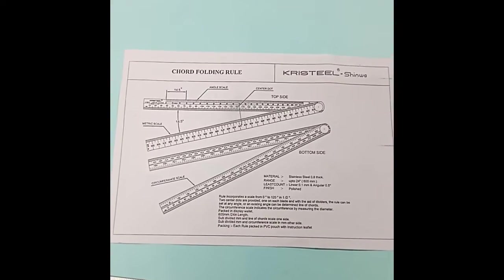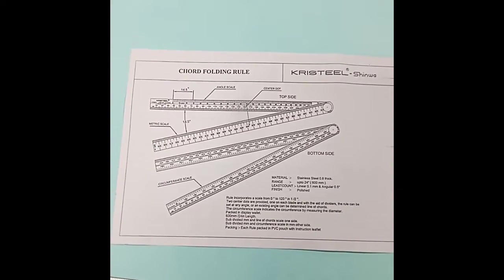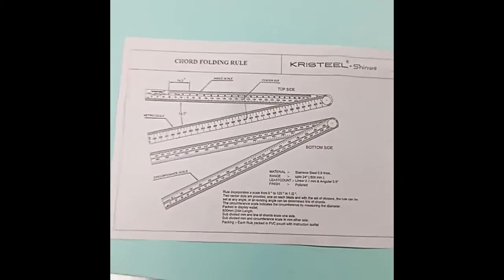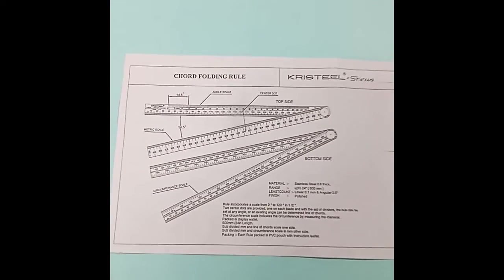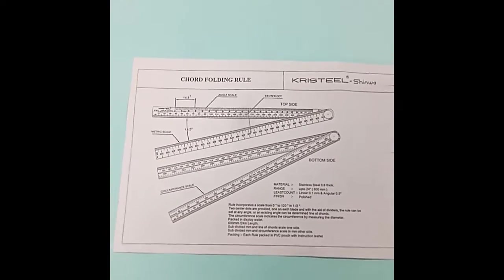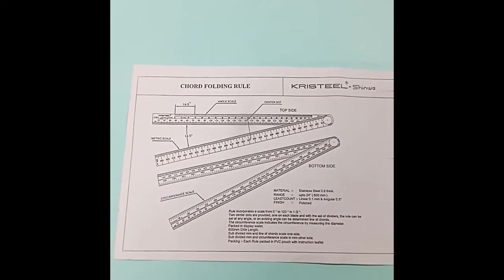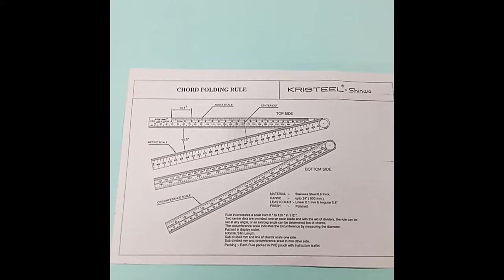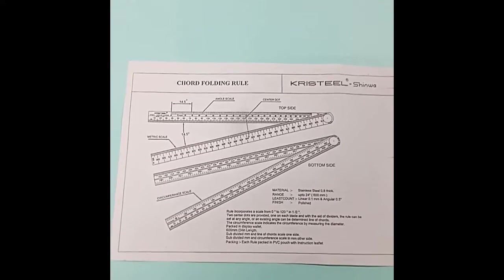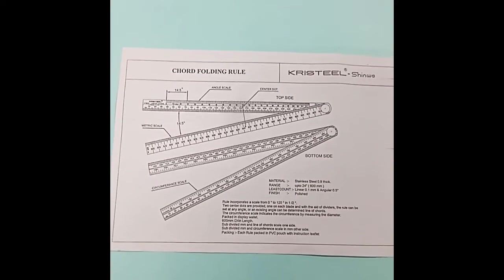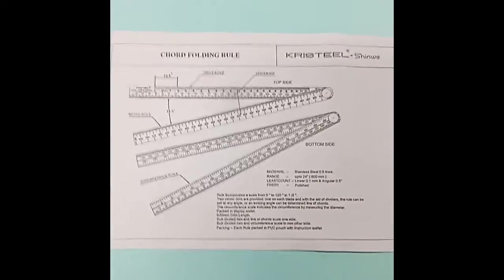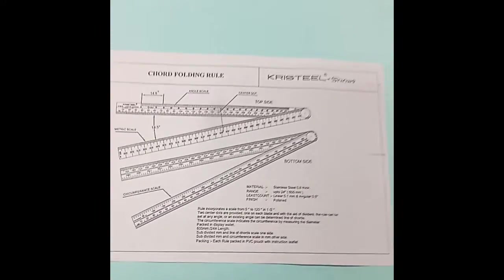This is the Crystal folding rule of 600mm with line of chord to check angles as well as linear dimensions. You can check diameter and its conversion to perimeter or circumference gauge. A user manual is also available in the packaging.